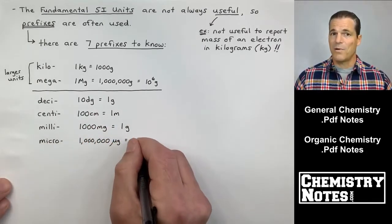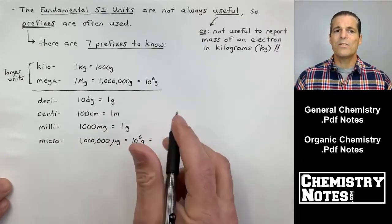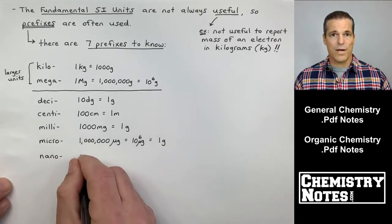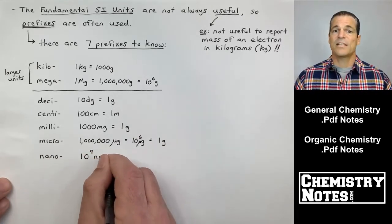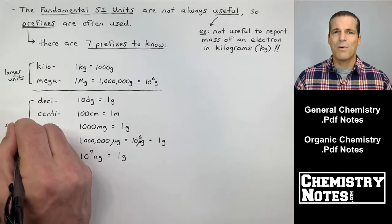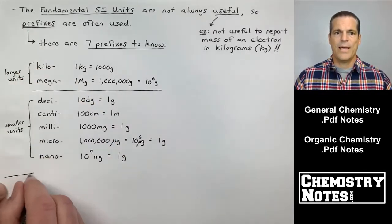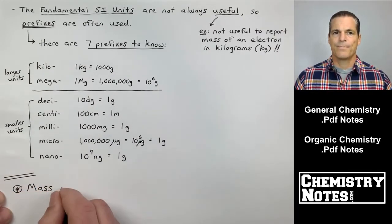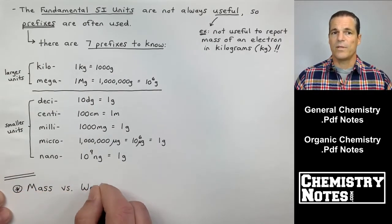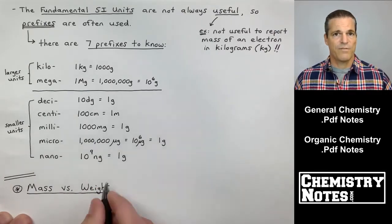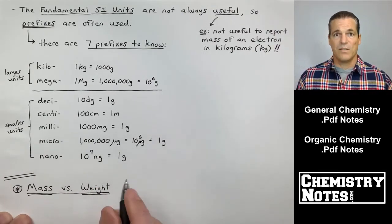Micro, getting smaller and smaller. Micro, one million. It takes one million of those little micrograms to make one gram. 10 to the six micrograms equals one gram. Even smaller. Nano, 10 to the ninth nanograms is equal to one gram. Now we will use these when we start to use dimensional analysis and when we start to do unit conversions. And that's coming up very soon, even in this video.